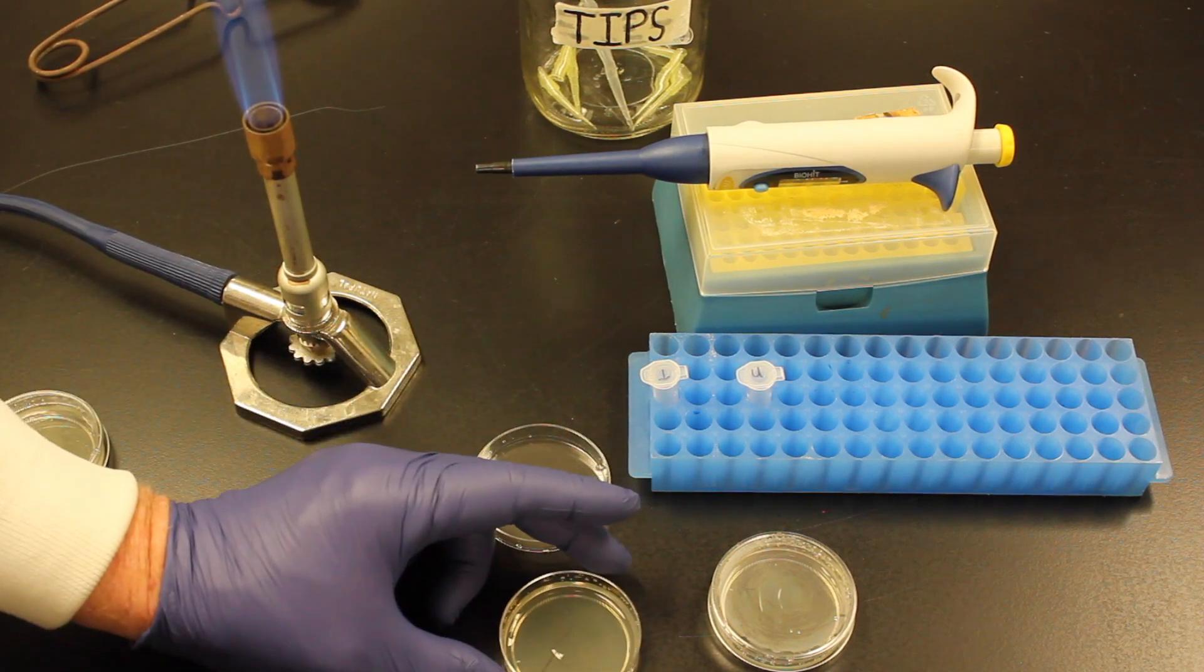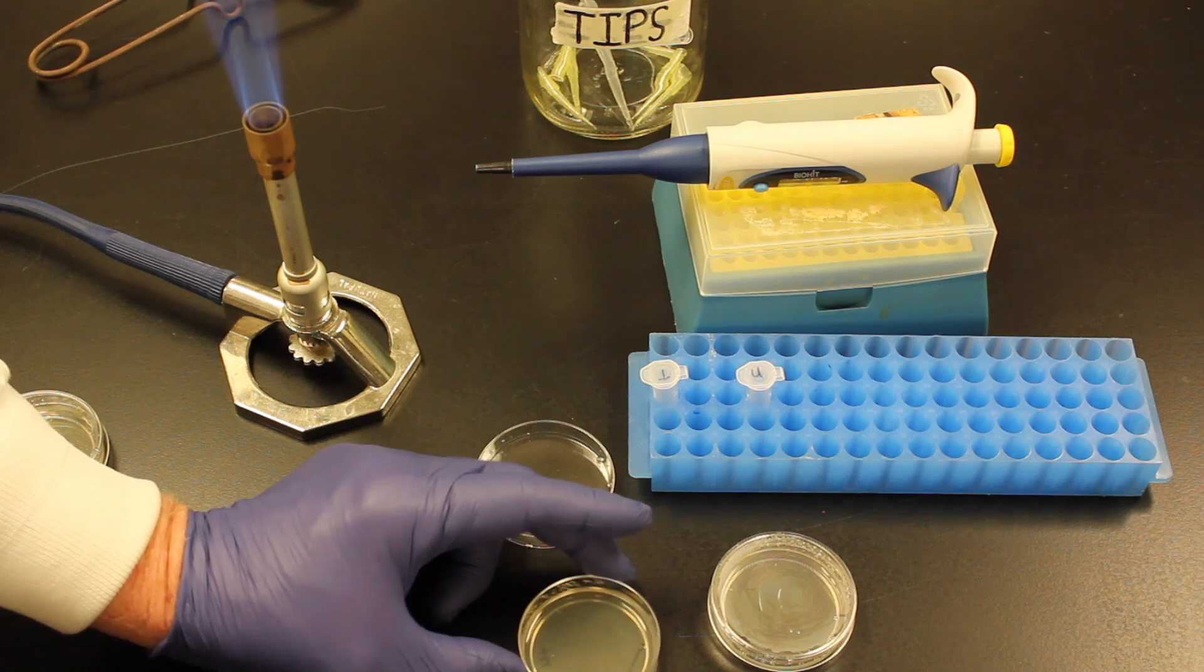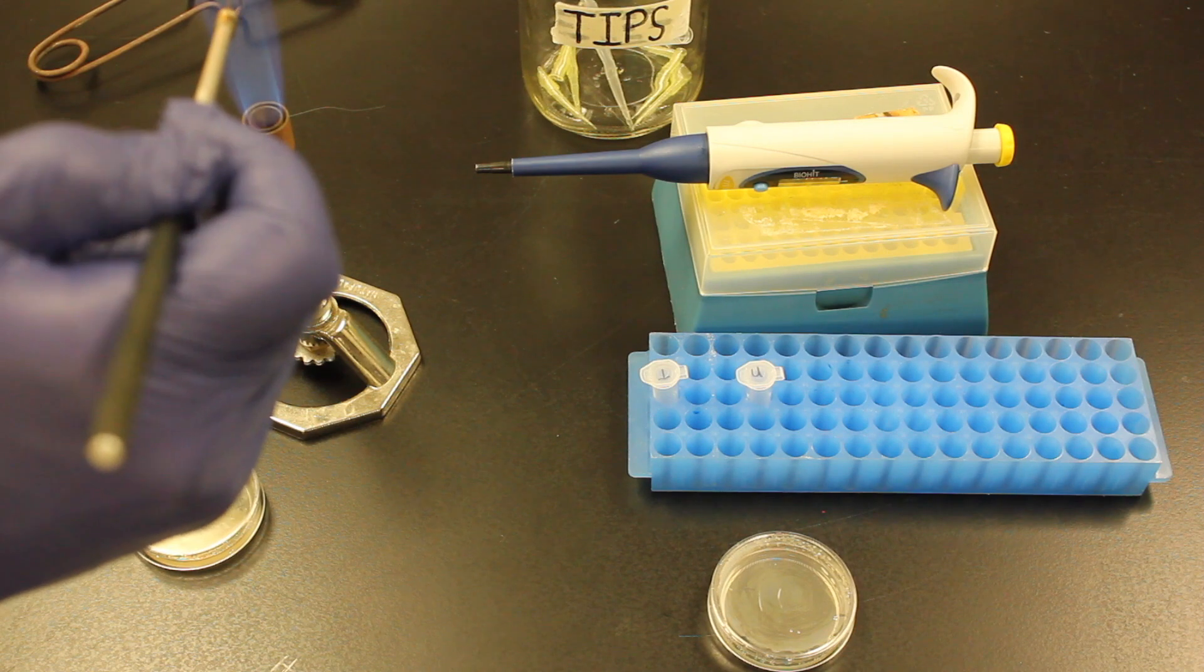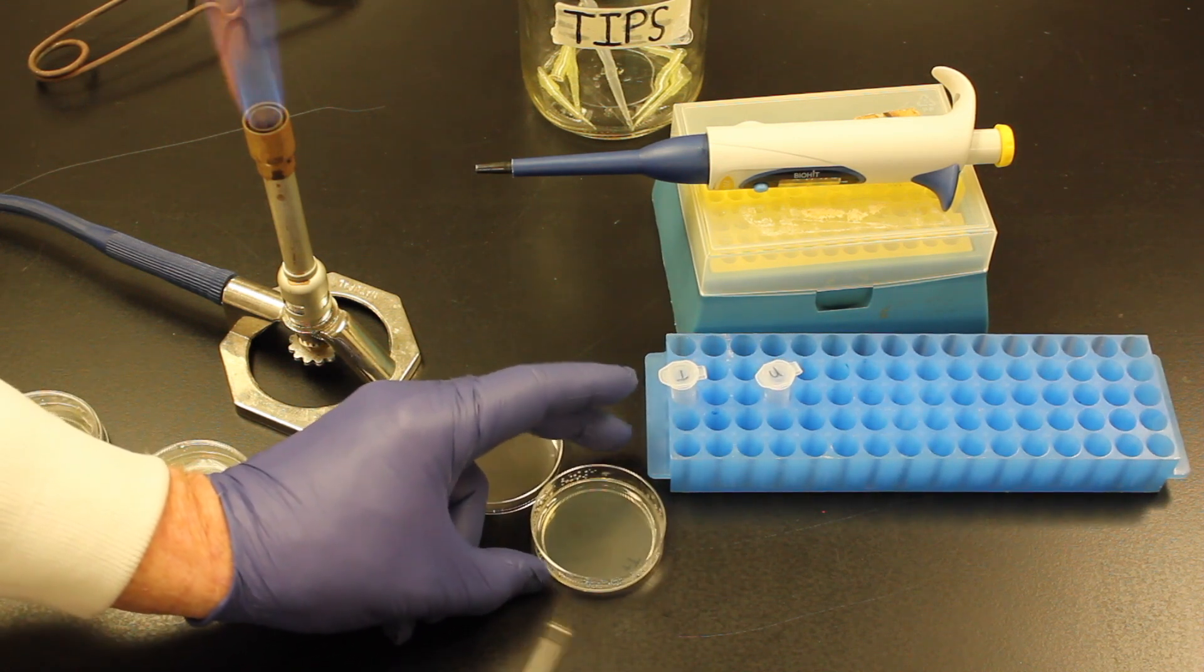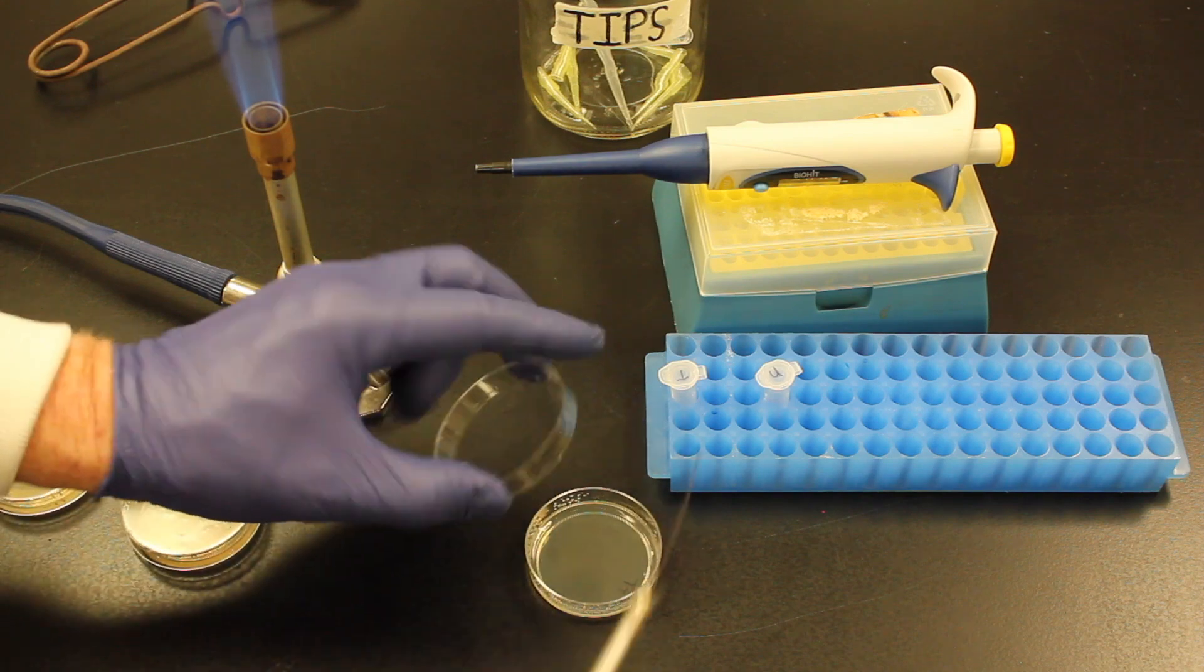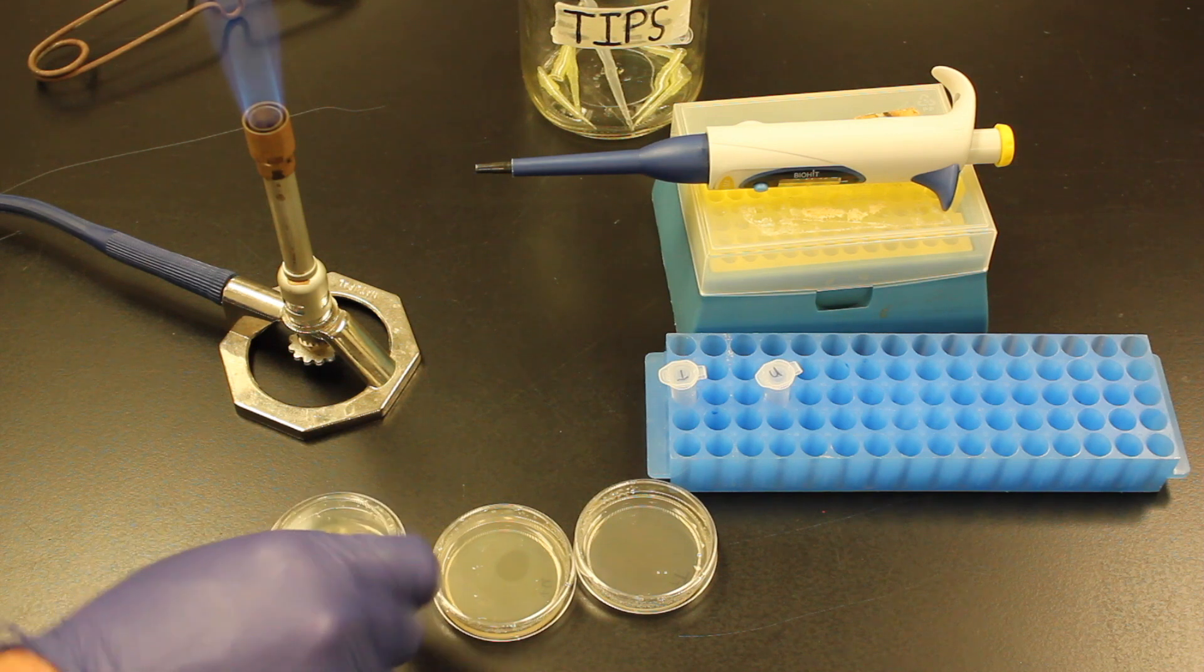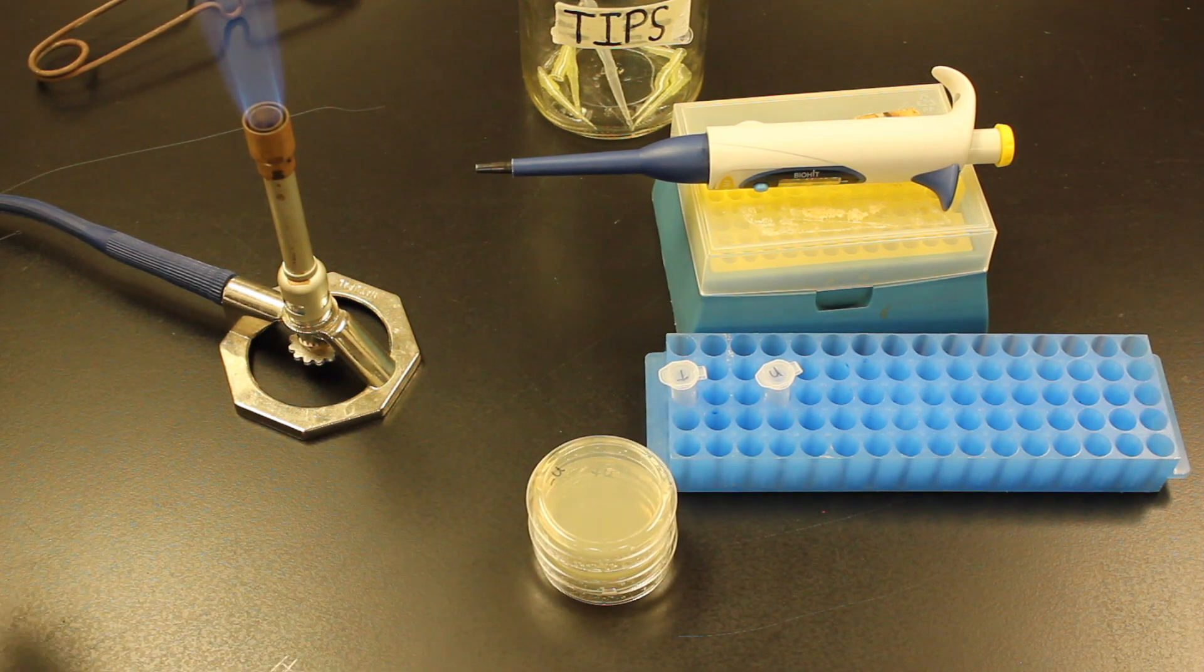And again, I will just let it cool down in the fluid. Then we will spread these around all over the entire plate. Flame my loop again. Make sure I kill everything. Then we will just cool it down again in the water. Then we will spread it around over the entire plate. Flame it one more time. And then I am going to put all three of these plates into the incubator. They will be incubated upside down like that for 48 hours. And upon 48 hours then we will take them out and look at them.